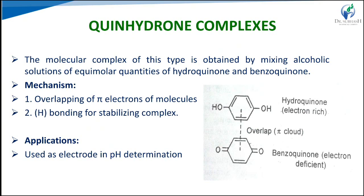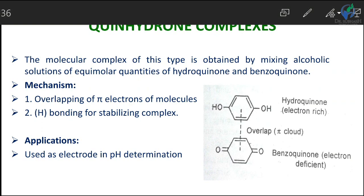Quinhydrone complexes are formed when alcoholic solutions of benzoquinone and hydroquinone are mixed in equimolar concentration. The complex is formed by overlapping of the pi electrons of molecules, and hydrogen bonding stabilizes the complex. These are used as electrodes to determine the pH.